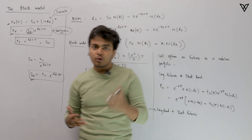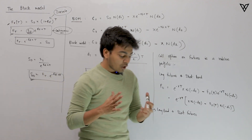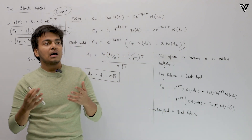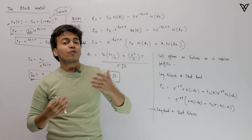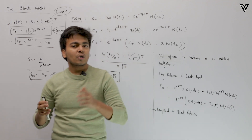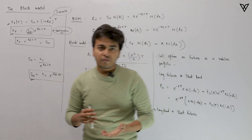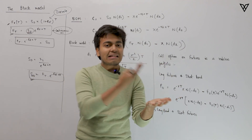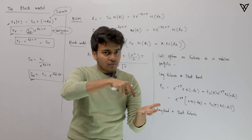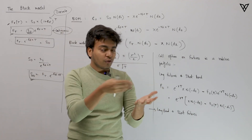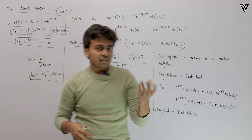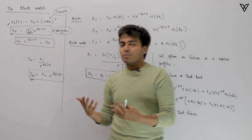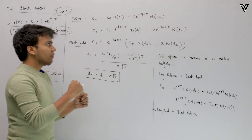Now we can start with the Black model. Fisher Black created it to price call options and put options on futures and forwards. Up till now we understood how call and put options work on a standard underlying asset class. Now we are going to take a futures or forward contract as the underlying asset and discuss options on that — call options and put options on derivative contracts such as futures and forwards. When we derive the formula we will see that it creates a riskless portfolio.